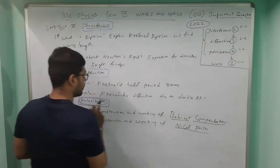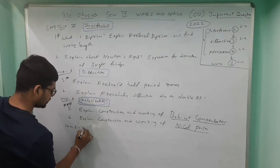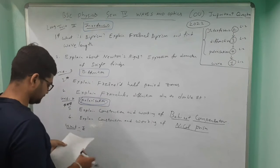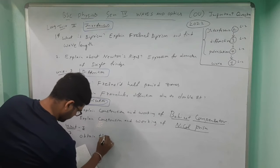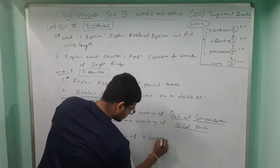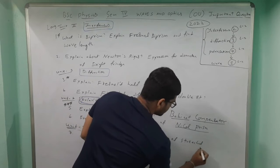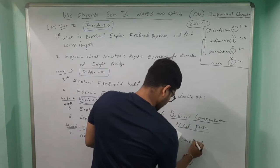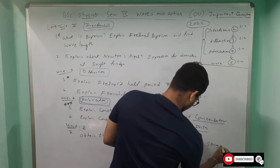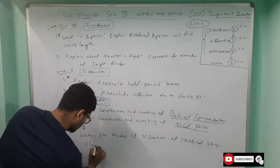So Interference, Diffraction, and Polarization long answer questions are over. Now we go to the first unit — Waves — which we study last. The seventh question: obtain the modes of vibration of a stretched string clamped at both ends. Remember, this is important.